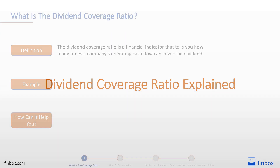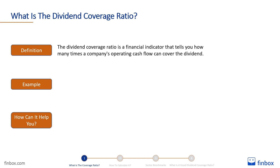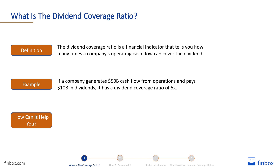The dividend coverage ratio is a financial indicator that tells you how many times a company's operating cash flow can cover the dividend. If a company generates $50 billion in cash flow from operations and pays $10 billion in dividends, it has a dividend coverage ratio of 5.